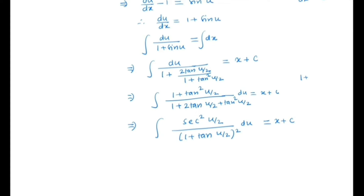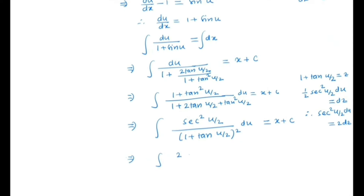Let 1 plus tan(u/2) equal z. Then we have half·sec²(u/2) du equal to dz, so sec²(u/2) du equals 2 dz. By substituting, we get the integral of 2 dz over z squared equal to x plus c.